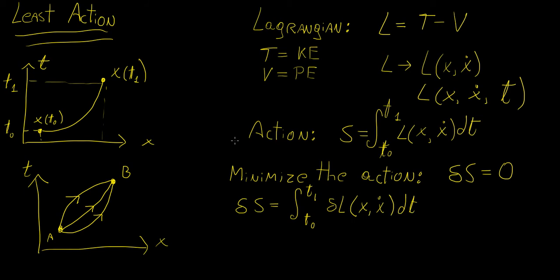Now in order to minimize the action, we need to take an infinitesimal quantity of the action and make it equal to zero. So this delta here really just stands for infinitesimal. So we can minimize this by essentially just taking the infinitesimal quantity of the Lagrangian.